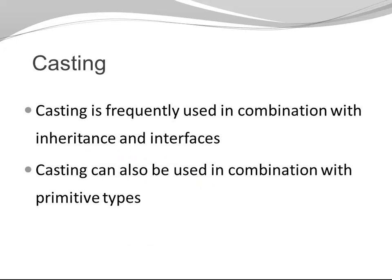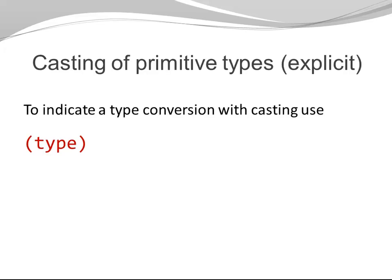Let's have a look at casting. Casting is frequently used in combination with inheritance and interfaces. Casting can also be used in combination with primitive types. For now, we are only looking at casting in combination with primitive types. To indicate a type conversion with casting, we use the following syntax. Two parentheses and in between the type that you want to convert to.